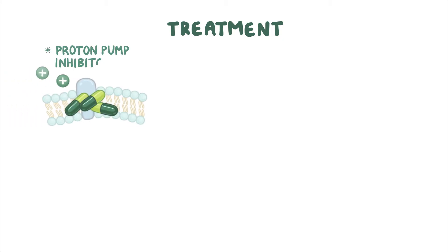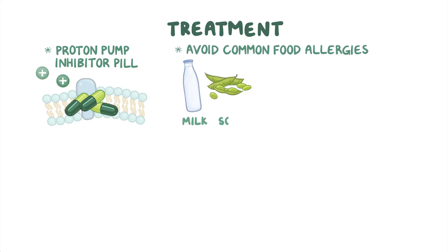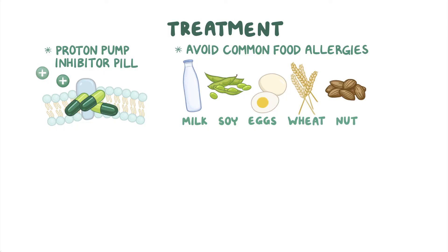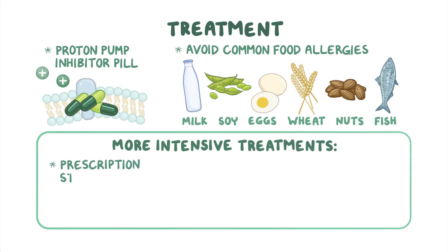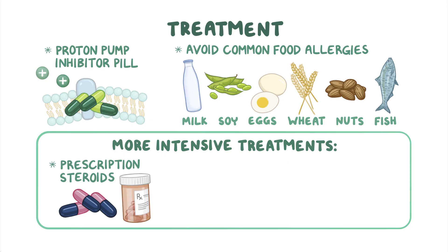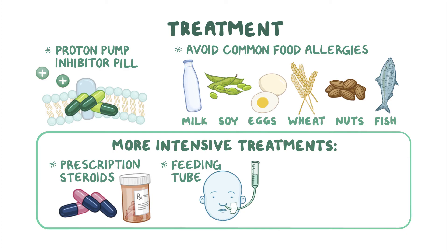Eosinophilic esophagitis can usually be treated by taking a proton pump inhibitor pill to decrease inflammation in the esophagus, as well as avoiding common food allergens such as milk, soy, eggs, wheat, nuts, and fish. If symptoms continue after initial treatments, more intensive treatments may be required. These other treatments include prescription steroids to further reduce inflammation and inserting a feeding tube to provide all meals in a liquid form directly into the stomach to avoid the esophagus coming in contact with any potential allergens.